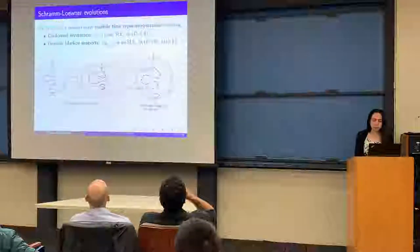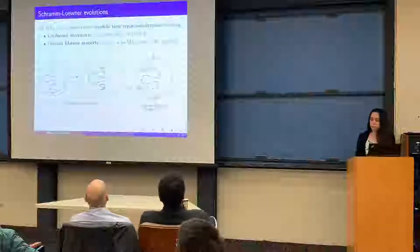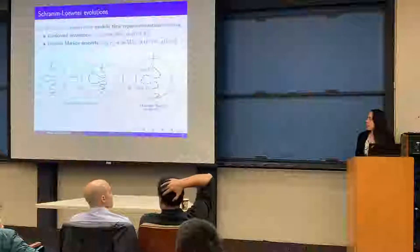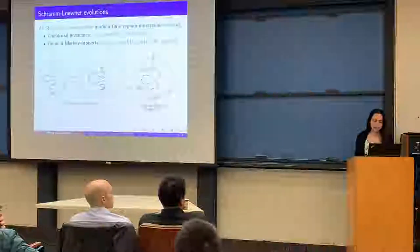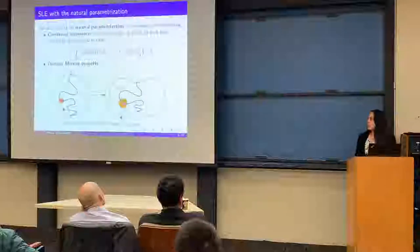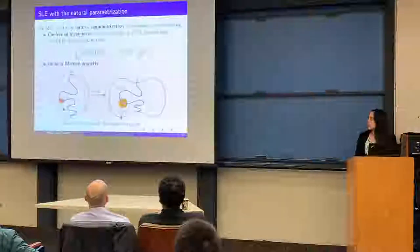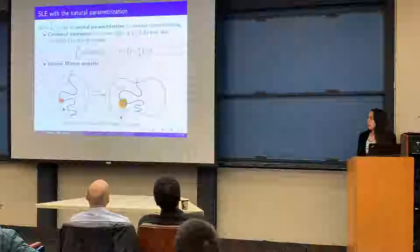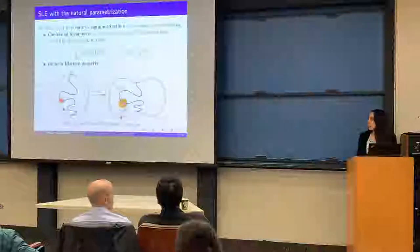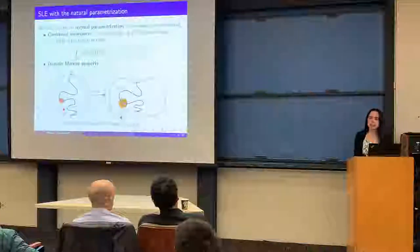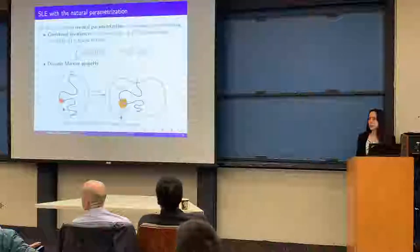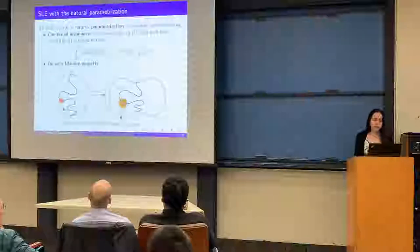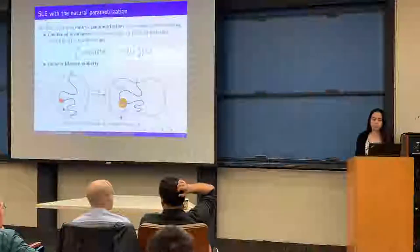One can show that if a random fractal curve satisfies these two properties, then it must be an SLE. In this definition, SLE is defined as a curve modulo reparametrization of time—if we reparametrize an SLE we still get an SLE. The most common parametrization uses half-plane capacity, but in this talk we look at another one called the natural parametrization of SLE. The idea is that we want to measure the d-dimensional volume of the curve.